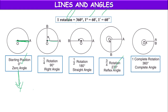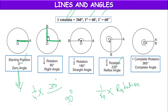If the ray has made one-fourth rotation from OA to position OB, it has completed one-fourth of the circle. One-fourth of 360 degrees equals 90 degrees, which is called a right angle.